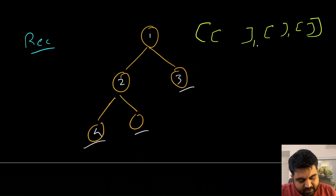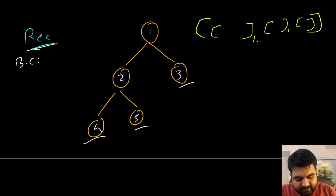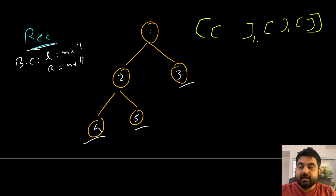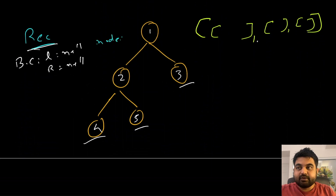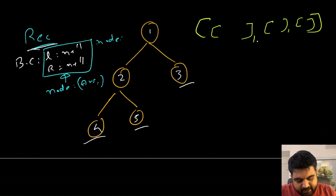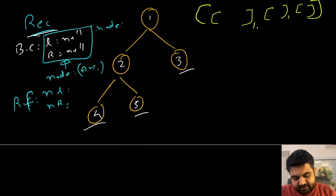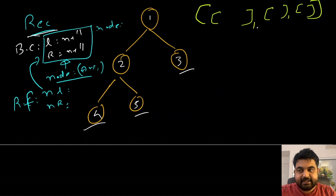Let's understand the solution with arbitrary values. In recursion we need two items: a base case and a recursive case. The base case is: if the left child and right child are both null, the node is a leaf — we add it to the answer ArrayList. The second base case is: if the node itself is null, we return null. The recursive case is: if the node has a left or right child, we call the same recursive method again until we reach the base case.